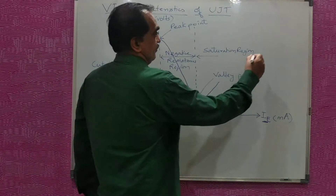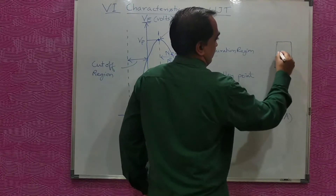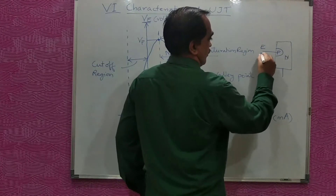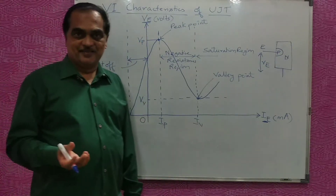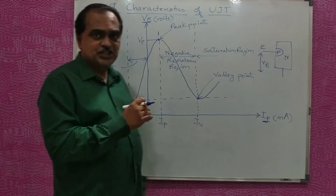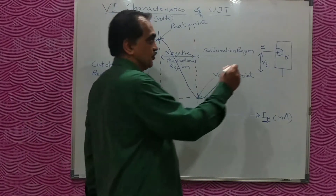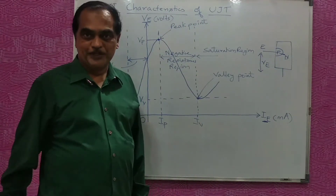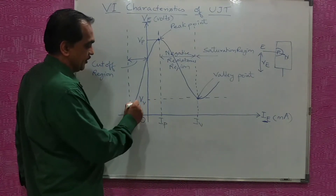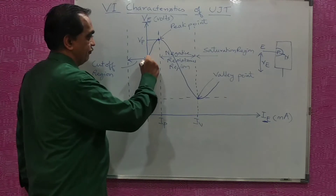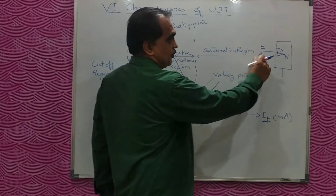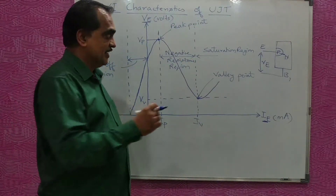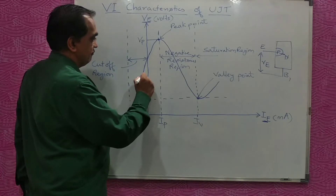Now here, when you increase the emitter voltage of the UJT — this is your UJT with a P-type and N-type bar, and here you have the emitter — whenever you increase VE, initially there will be no forward bias of that PN junction. There will be a small leakage current flowing, and we are showing this as a negative leakage current. You are increasing the emitter voltage between base 1 and emitter, but there is only a small leakage current flowing.